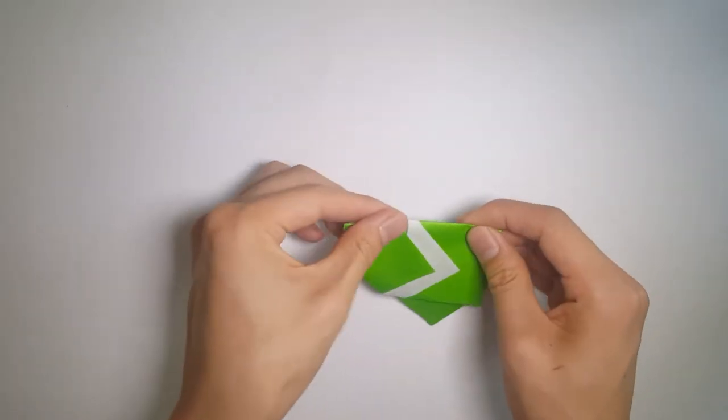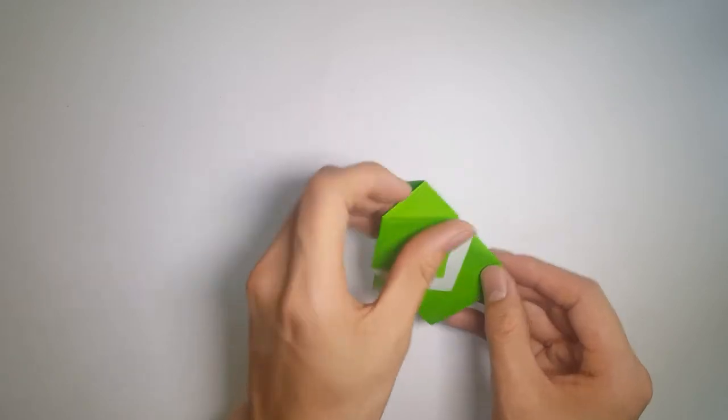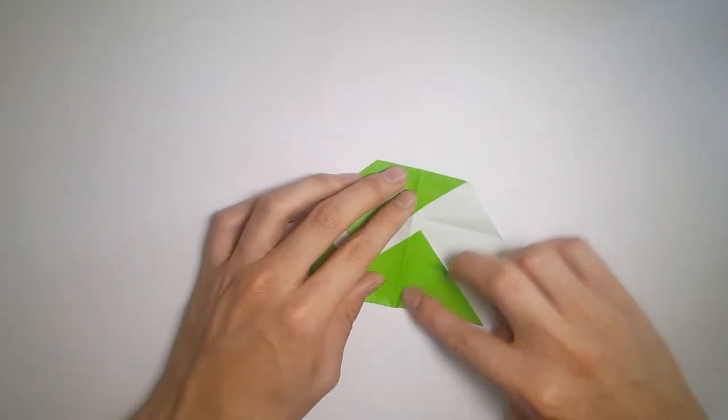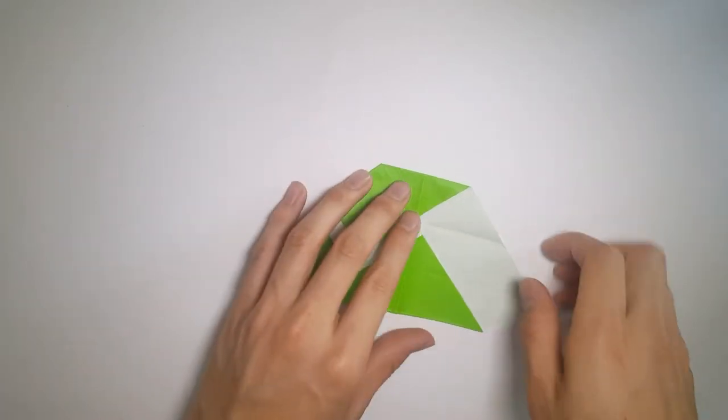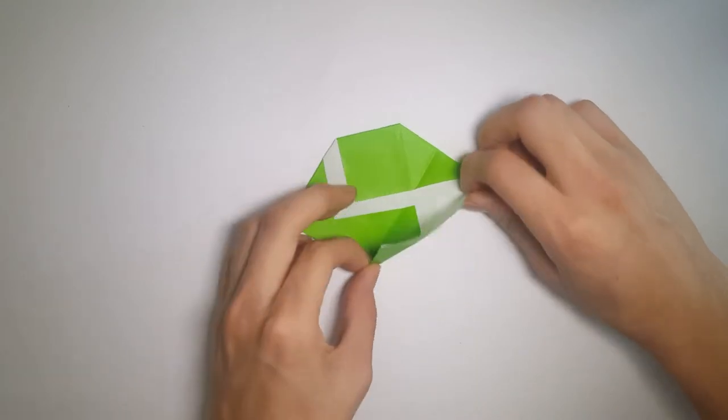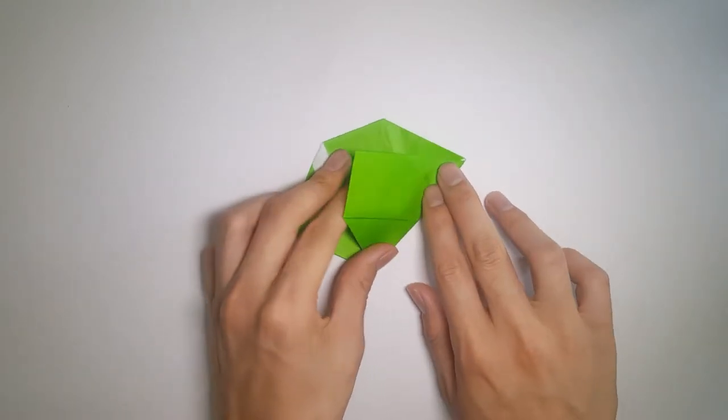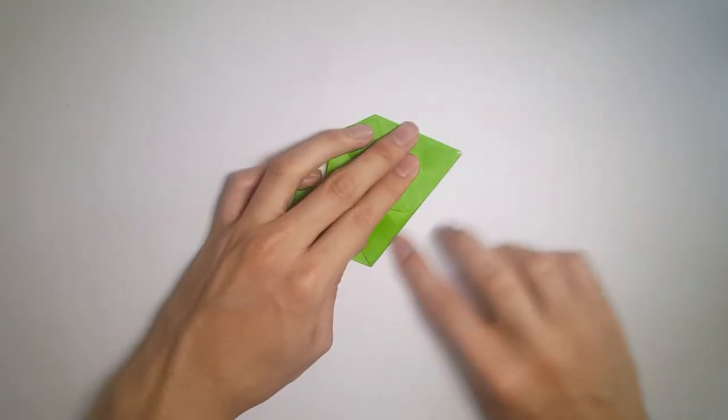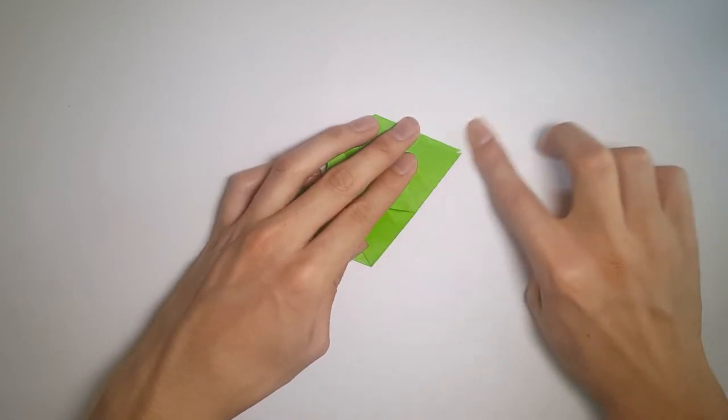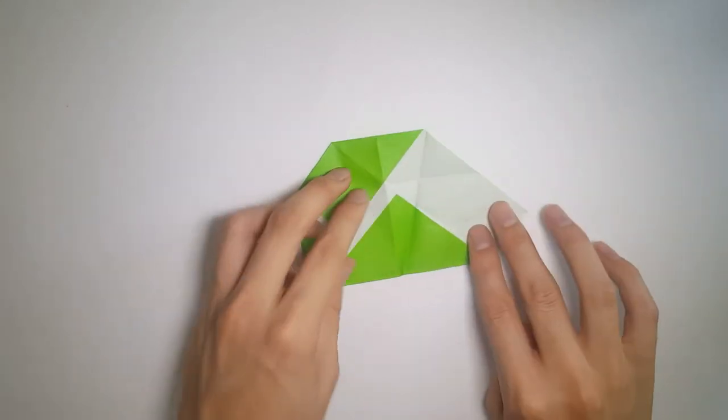Now from the bottom to the top corner, we want to make a diagonal fold. Once that's been done, these are going to help us with the next step, which is quite tricky.